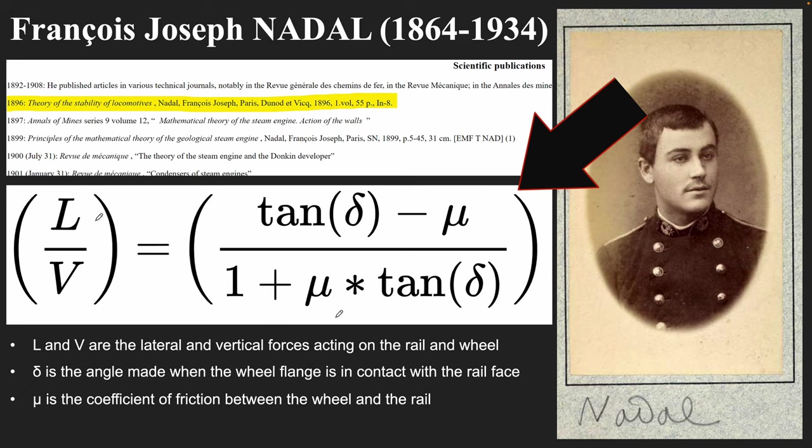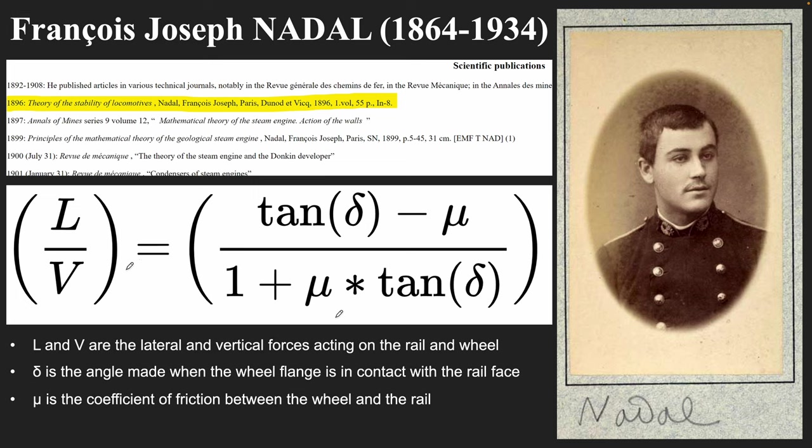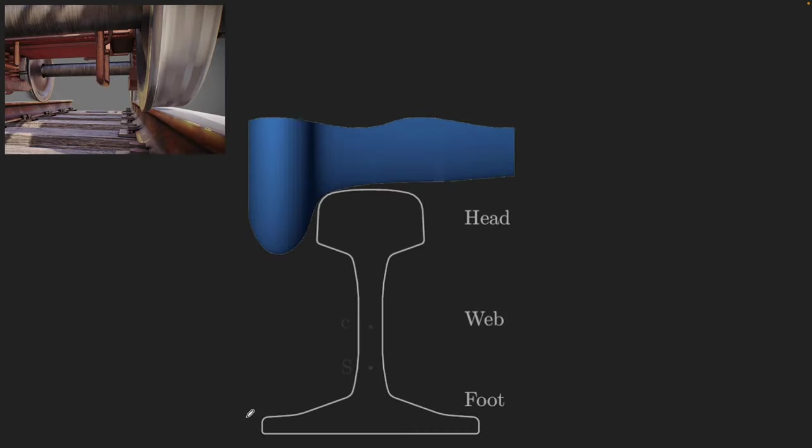It's not too complicated because we're just going to derive this. But for now, looking at this formula, L basically means the lateral force that we've been talking about. V is the vertical force, or you can also say the weight of the train. Then this is the angle theta between the wheel and the rail. And mu is the coefficient of friction, which characterizes how rough or smooth two surfaces are.